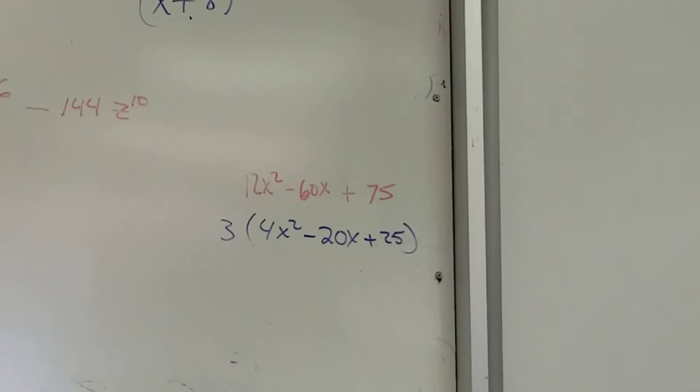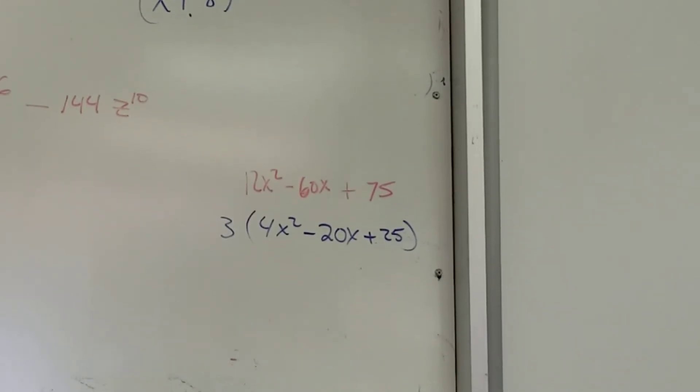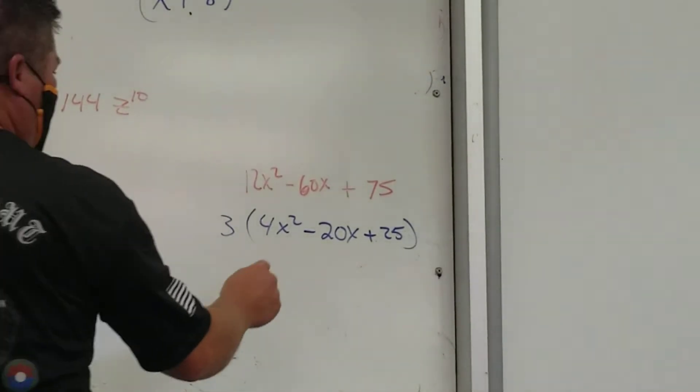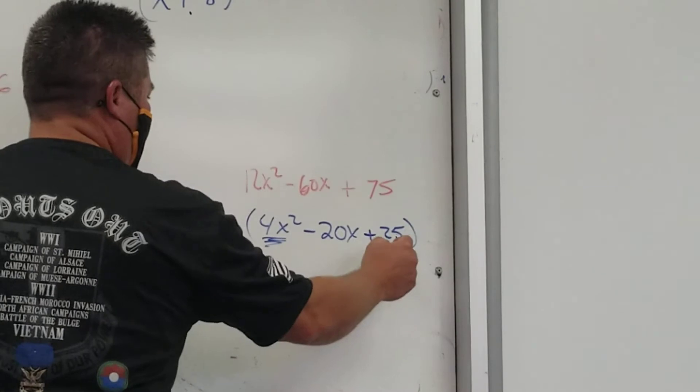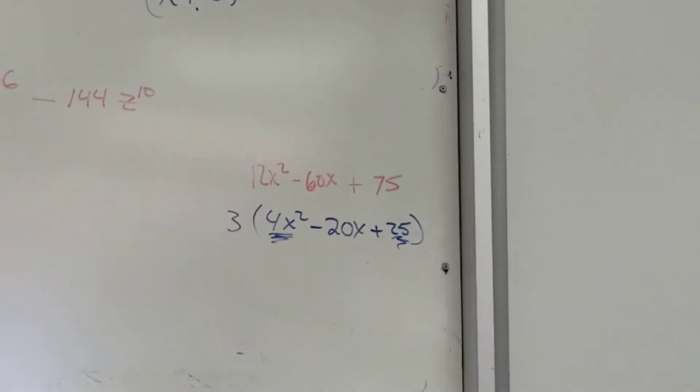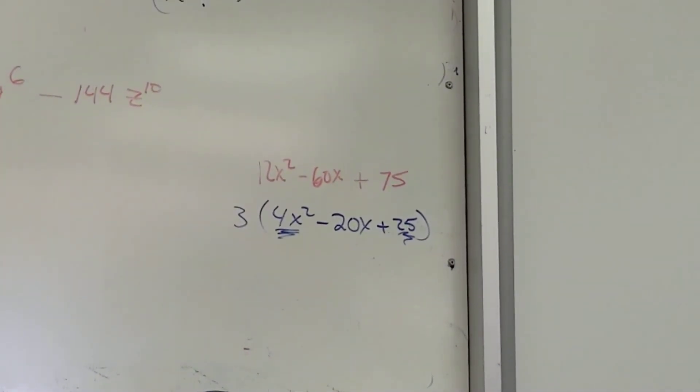So you can break it down. It's probably a perfect square what? What are we learning today? It's probably a perfect square what? Trinomial. How come? That's a perfect square and that's a perfect square. That's what I want to look for because then I don't have to do box method.